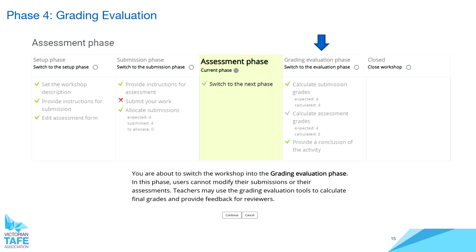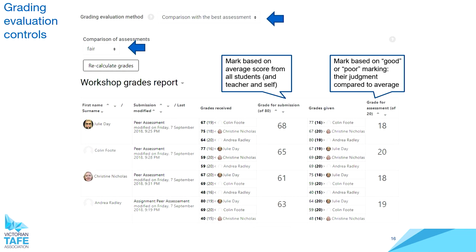The workshop activity currently only has one grading evaluation method, called comparison with the best assessment. This means the grade for assessment is calculated by comparing the average grade with how far away the student is from that grade. In the gradebook view, the third-to-last column shows the mark based on the average score from all students — including the teacher and potentially the student themselves — as the grade for submission, which we set up out of 80. The final column shows the mark based on the quality of their marking, compared to the average. So two marks are output to the gradebook.